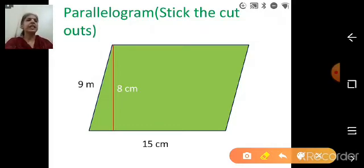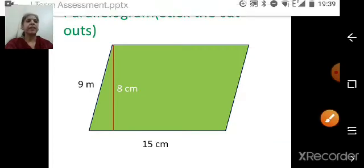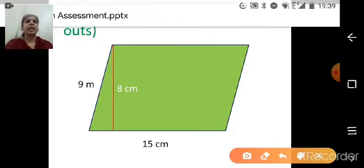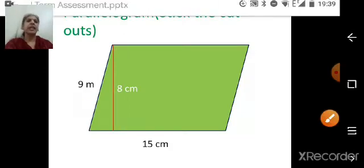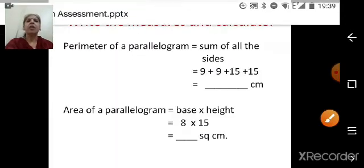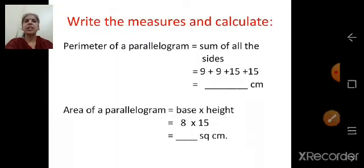And the height is given to you, which is 8 cm. So, 15, 9, 8. This is 15. This is 9. And the height. This 8 is nothing but children, height. Right? Yes. Now, you have to write the measures of whatever the figures you are drawing. And you are going to calculate also.